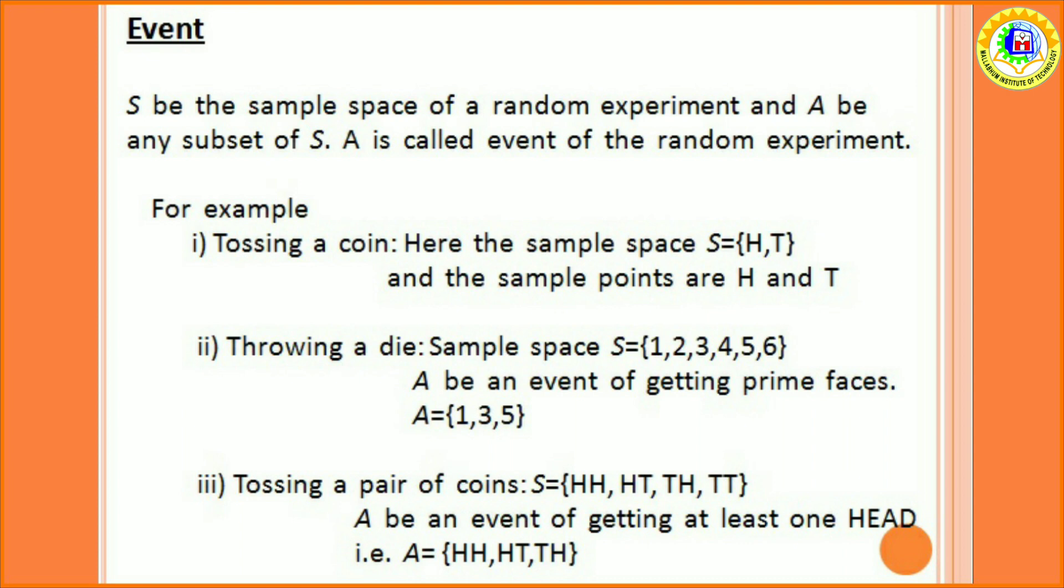Next, throwing a die is also a random experiment. We all know that when we throw a die, the possible outcomes are 1 or 2 or 3 or 4 or 5 or 6. All these are sample points. So, sample space S is this. Consider an event A of getting prime faces. That is A is 1, 3, 5.